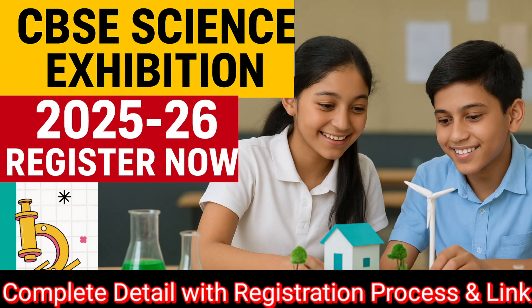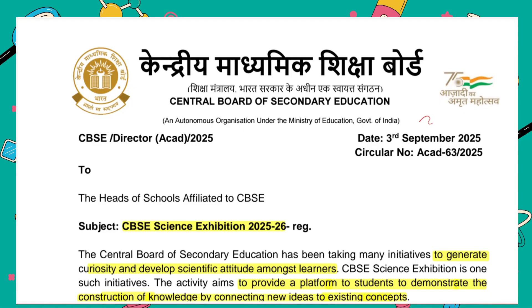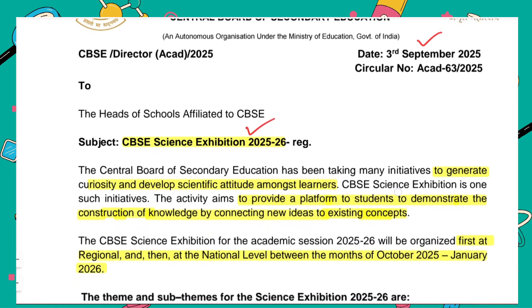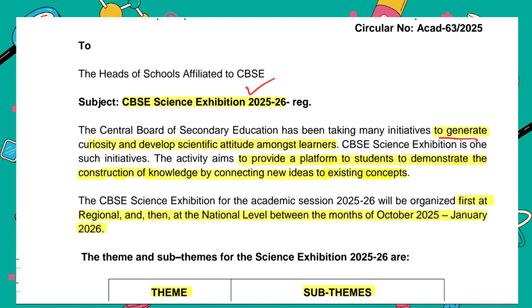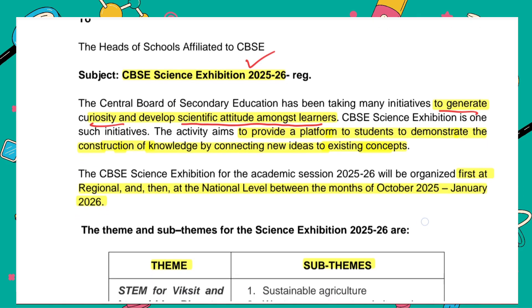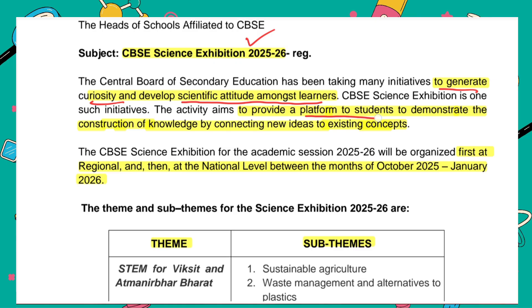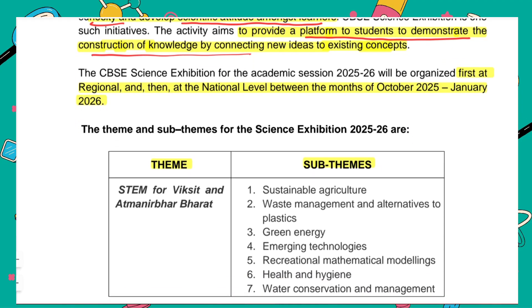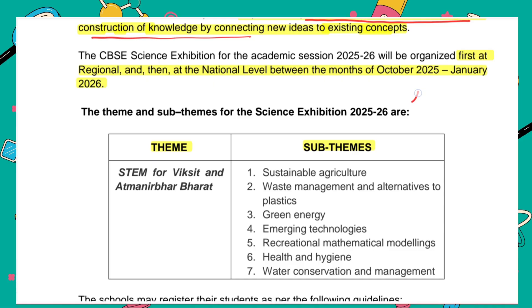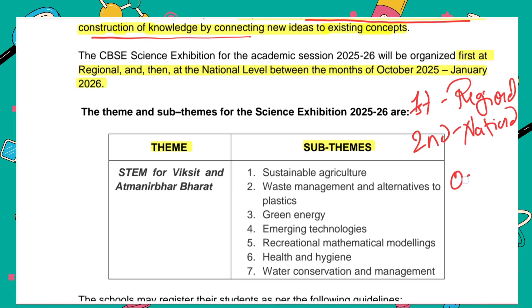CBSE has officially announced the CBSE Science Exhibition 2025-26. This is the official circular released by CBSE on 3rd September 2025. CBSE has taken many initiatives to generate curiosity and develop scientific attitude among learners, and the Science Exhibition is one of such initiatives. It provides a platform to students to demonstrate the construction of knowledge by connecting new ideas to existing concepts. The exhibition will be held in two levels — the first level will be regional and the second level is national — and both levels will take place between October 2025 to January 2026.